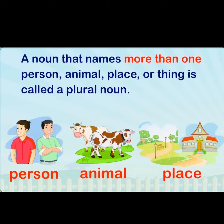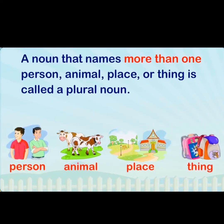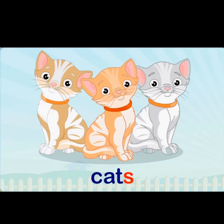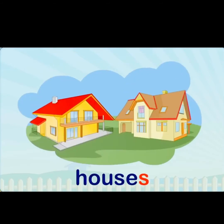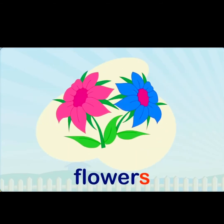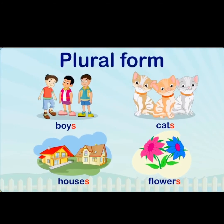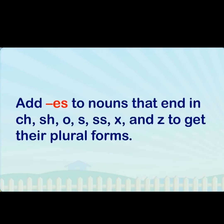A noun that names more than one person, animal, place or thing is called a plural noun. For example: boys, cats, houses, flowers. You see these are plural forms. We add -s to most of the nouns to show plural form.